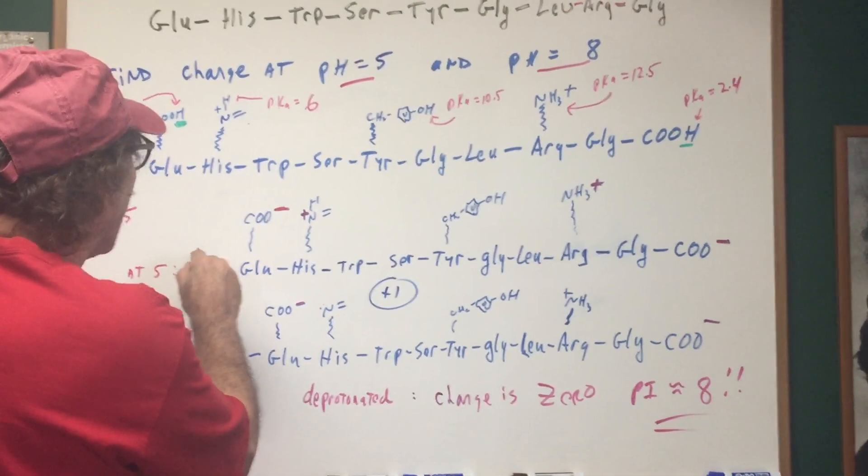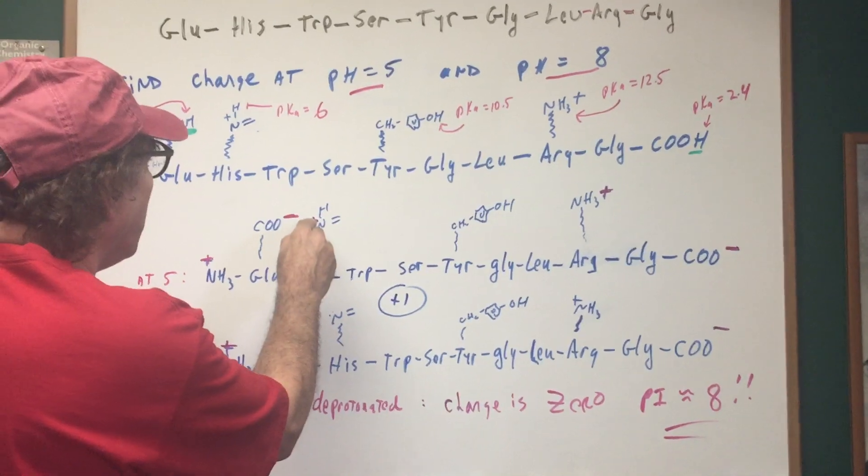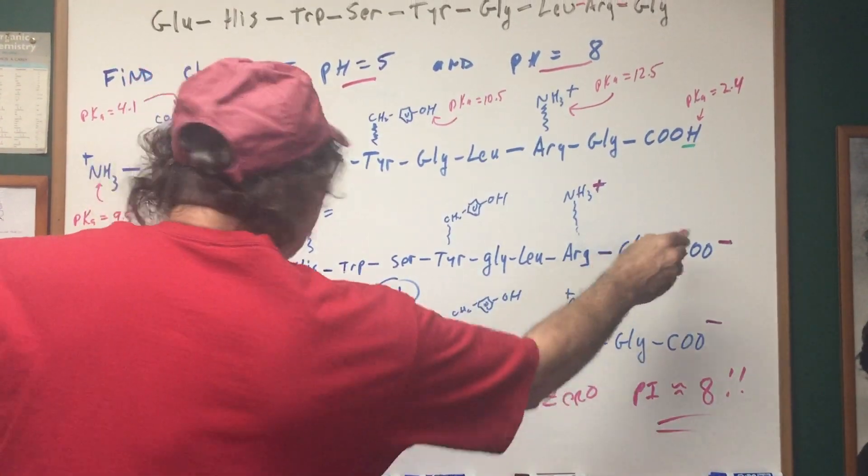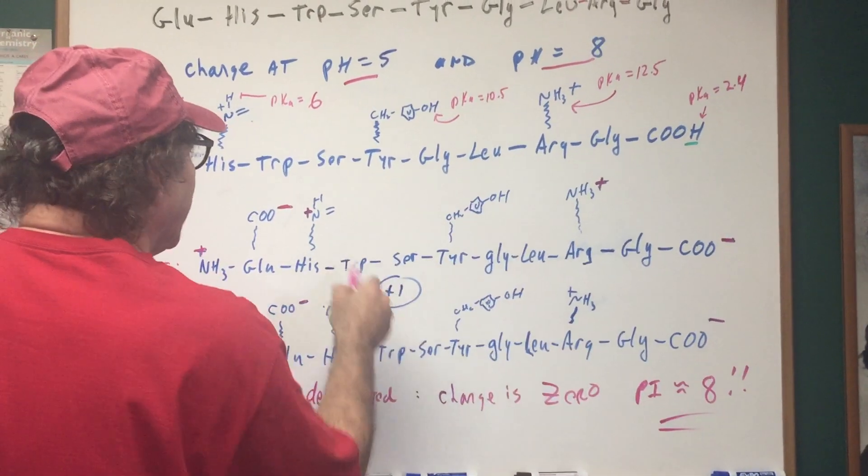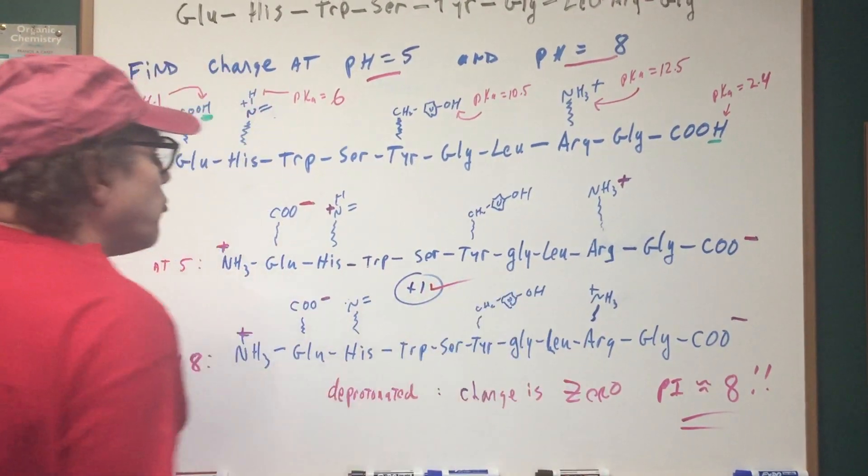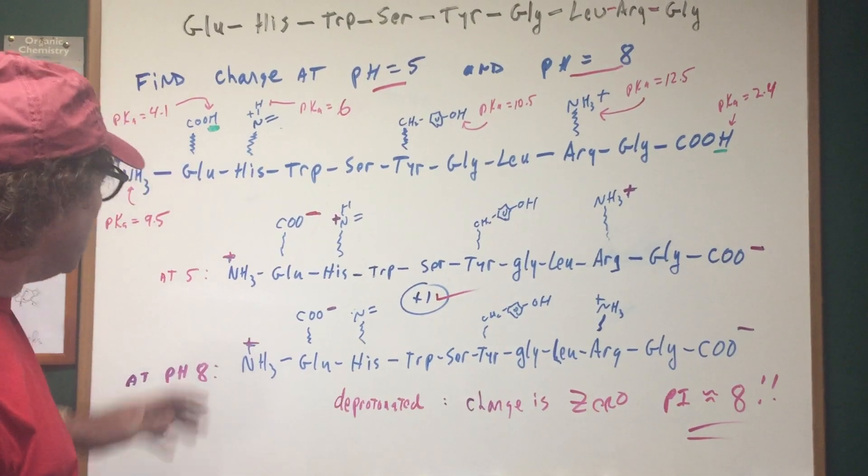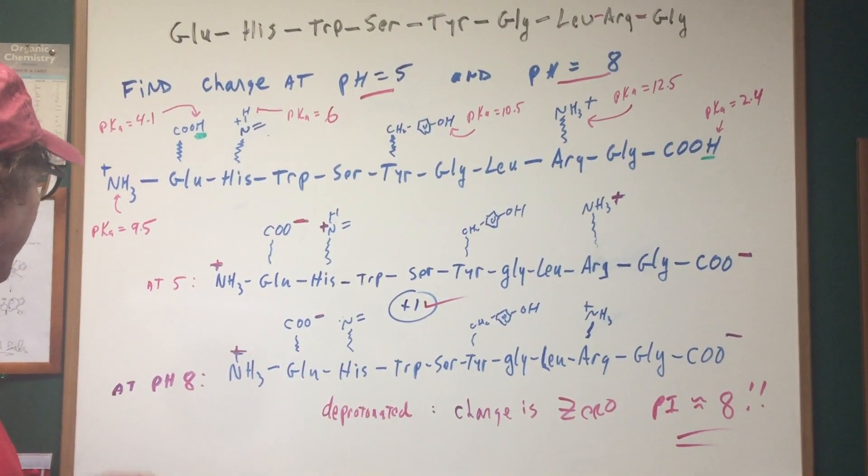So adding them up, you got a plus one, minus one, plus one, plus one, and a minus one. So what does that give me? It's a plus three, minus two. So that gives me an overall charge of plus one. So that means at a pH of five, we would have a plus one.